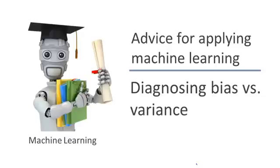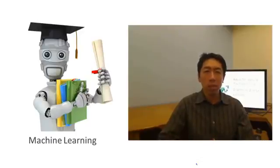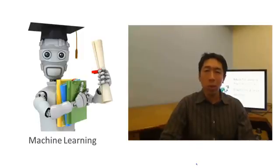If you run a learning algorithm and it doesn't do as well as you were hoping, almost all the time it will be because you have either a high bias problem or a high variance problem — in other words, either an underfitting problem or an overfitting problem. It's very important to figure out which of these two problems you actually have, because knowing that will give a very strong indicator for what are the useful and promising ways to try to improve your algorithm.